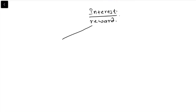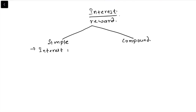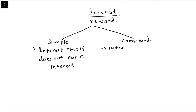Now there are two types of interest rate: simple interest and compound interest. Simple interest means the interest itself does not earn any interest, whereas in compound interest, the interest itself earns interest.